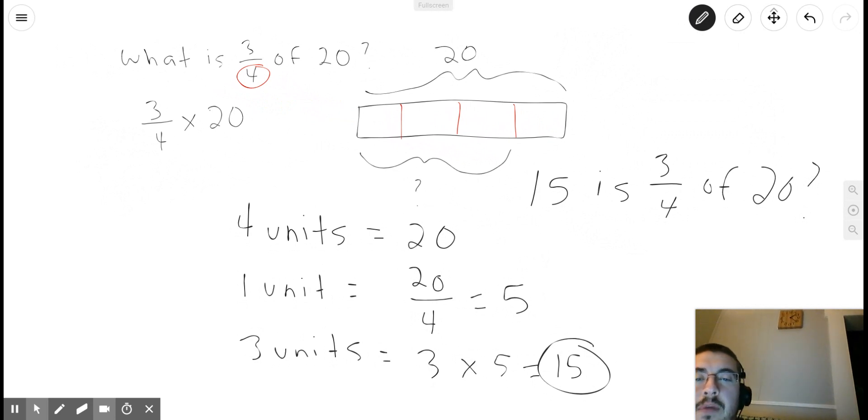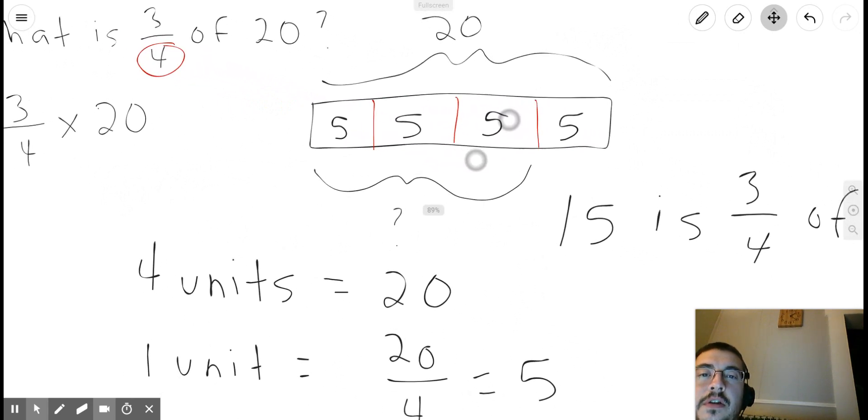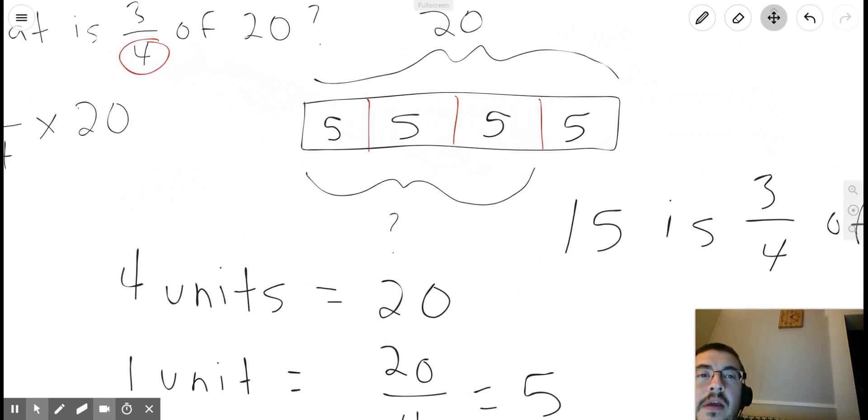And we can see that if we know that one unit is equal to five, we can just write in five in each section or each unit of our tape diagram, and we can see pretty clearly that three out of the four sections is equal to 15, because five plus